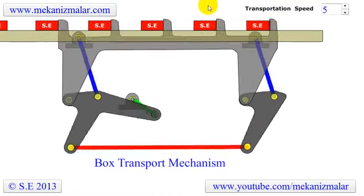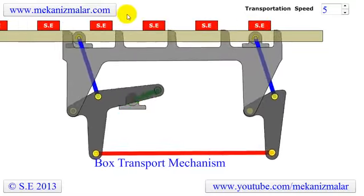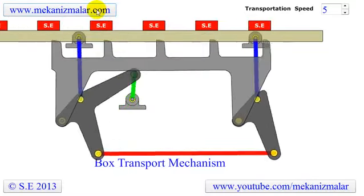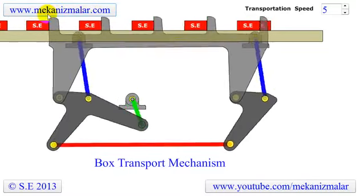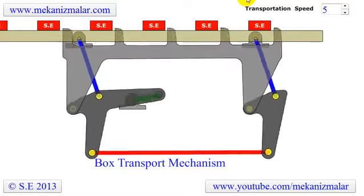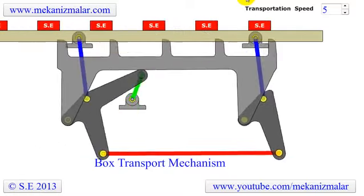There are four stations in here, with four different operations on the box: putting the item in, closing, sealing, and adding the labels to the box.